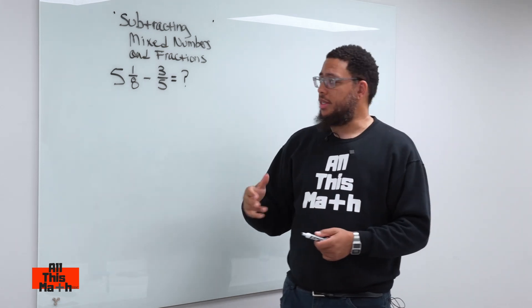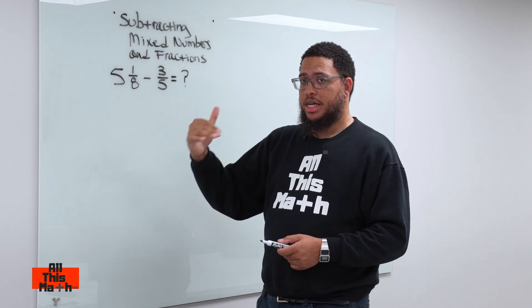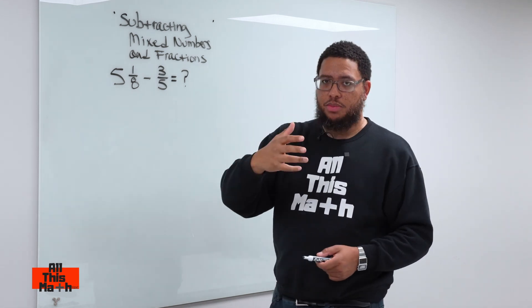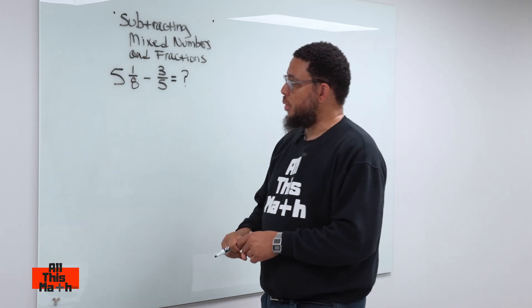It's the least common multiple. One way to get that is just to multiply these numbers together. In this case, you end up with the least common multiple. Sometimes, you'll get a common multiple, but not the smallest one. In this case, you will get the least one. So, eight times five is 40.